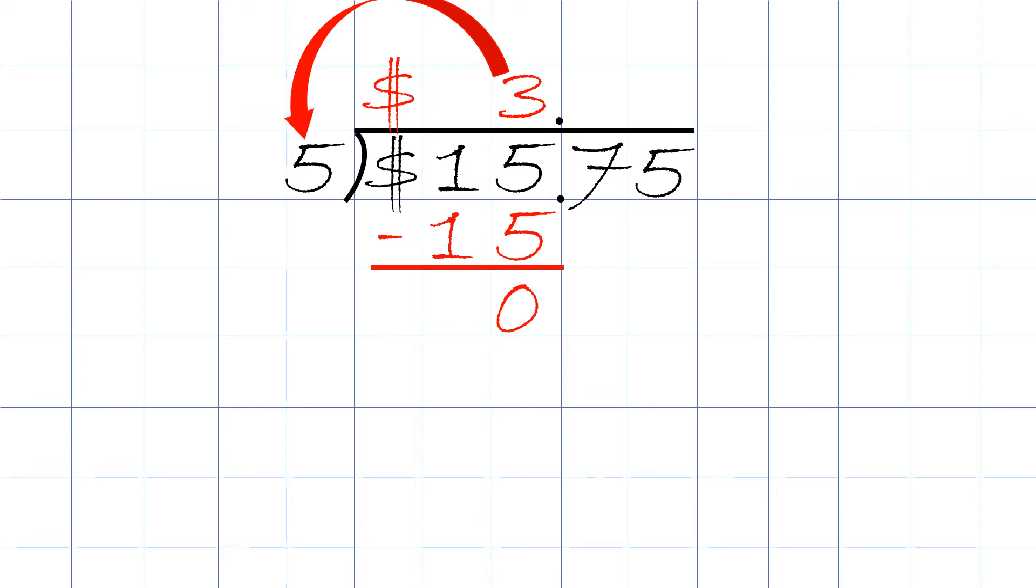Then we go to the seven and we bring down the seven. Next, what we do is we take seven divided by five, which will be one point something, something, something. Or we could ask how many times does five go into seven and the answer will be one. We then take one times five. The answer will be five, which we write underneath the seven. And then we take seven minus five and the answer will be two.